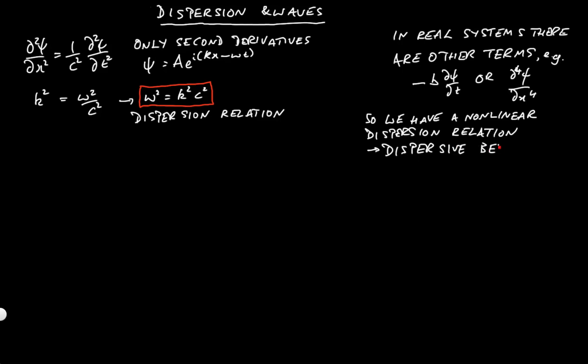If you have a system where it's non-dispersive, that just means you've got the simple relationship between ω and k that we see on the left-hand side highlighted in red. Examples of that would be electromagnetic waves in a vacuum and particular forms of water waves.